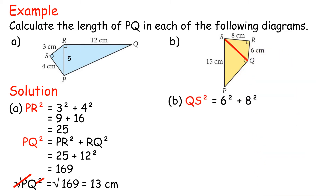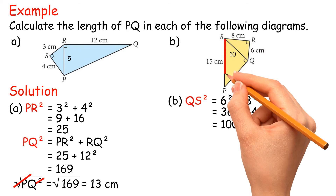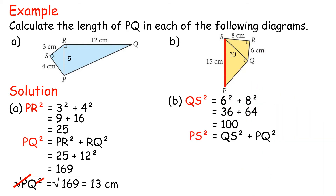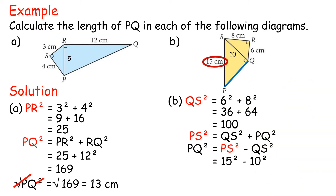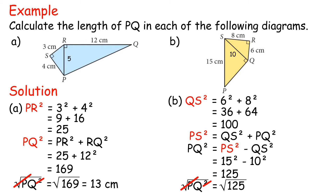Solution B. Q² = 6² + 8² = 36 + 64 = 100. PQ² = P² − Q² = 15² − 10² = 125. PQ = √125 = 11.18 centimeters.